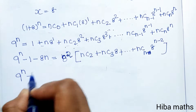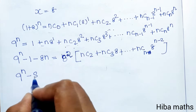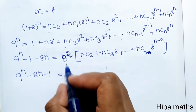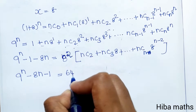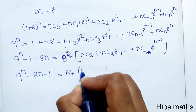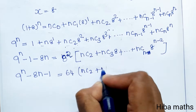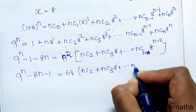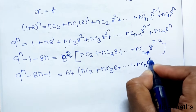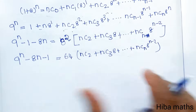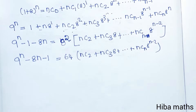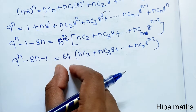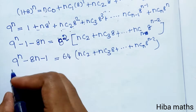So 9 power n minus 8n minus 1 equals 8 squared times the bracket nC2 plus nC3 times 8 up to nCn times 8 power n minus 2. Since 8 squared is 64, the full term is divisible by 64.